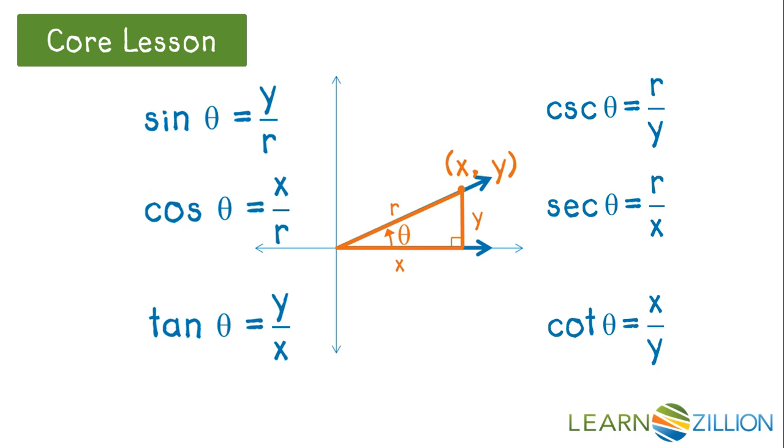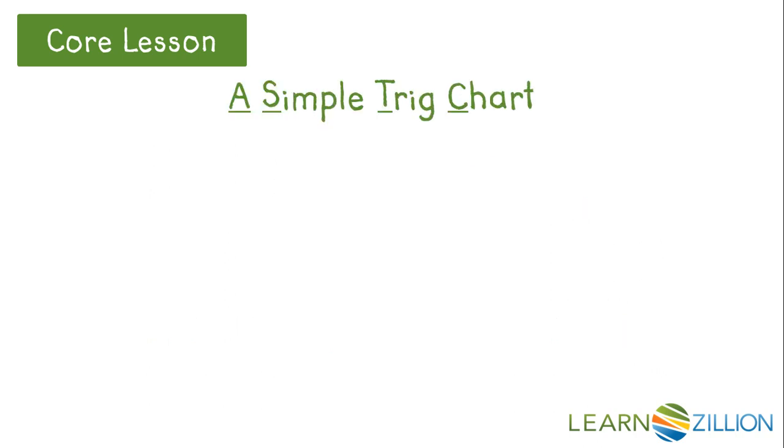Now let's talk about signs, as in positive or negative. Since r is the radius of a circle, it is always positive. The signs of x and y depend on their coordinates. On the axes, x or y is zero, but we'll talk about axis angles in another lesson.